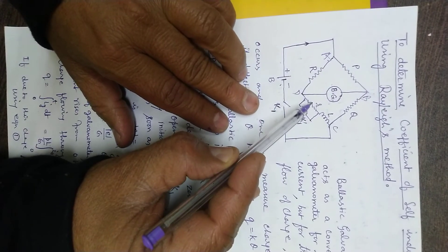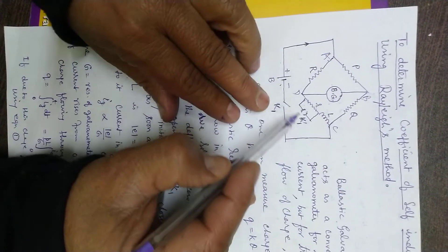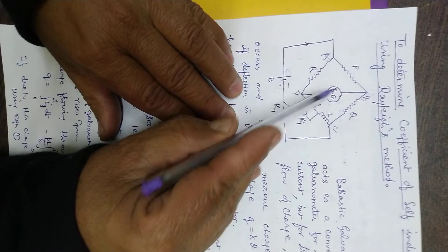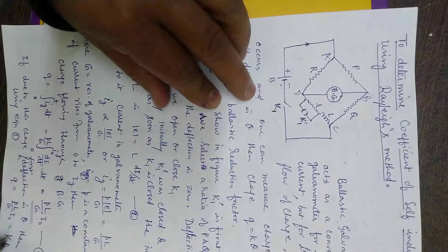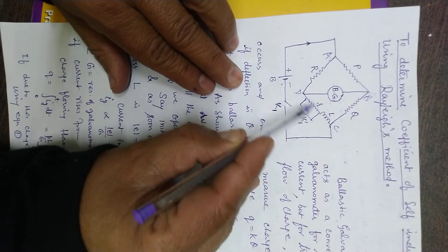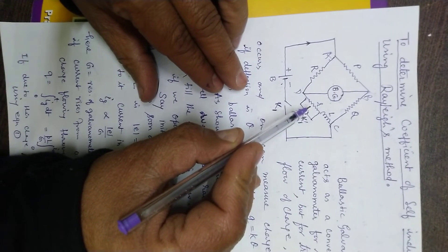Now due to this potential across the small r, i0 r, which is now taking place after opening K1 dash, there will be an additional current in the galvanometer that is proportional to this e dash equals i0 r.